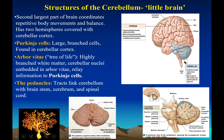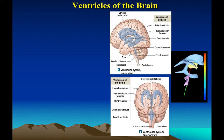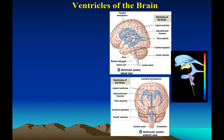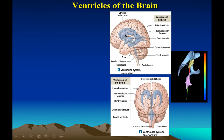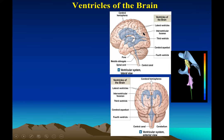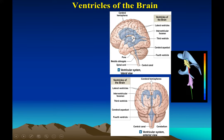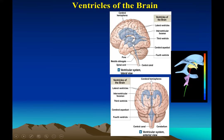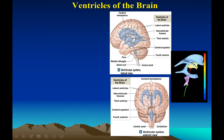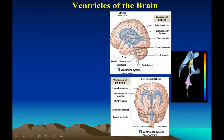Now we need to discuss cerebrospinal fluid and the ventricles of the brain. Ventricles are hollow cavities in the brain. Under the cerebrum, you can see the lateral ventricles — left and right. Then there is the third ventricle, connected by an aqueduct to the fourth ventricle. So we have four ventricles: two lateral, the third, and the fourth, all connected by aqueducts.